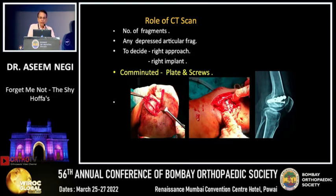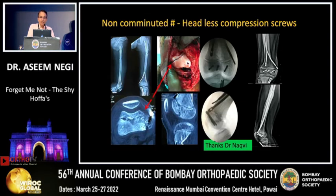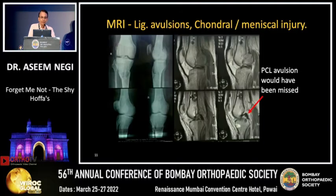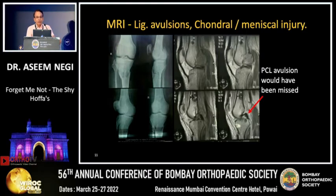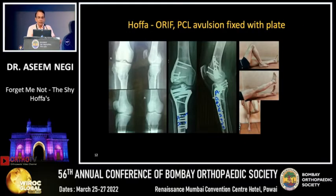Even in comminuted fractures, use of a plate is mandatory, while non-comminuted fractures can be treated by headless compression screw, as we did in this adolescent patient. MRI can show ligament injuries, PCL avulsion, chondral and meniscal injuries — a PCL avulsion would certainly have been missed if the MRI had not been ordered.